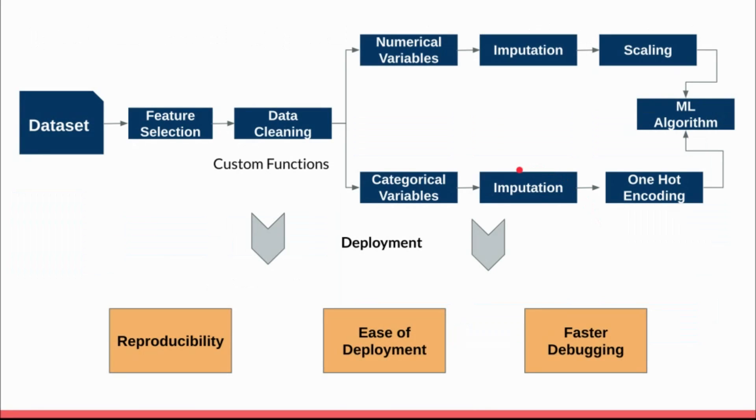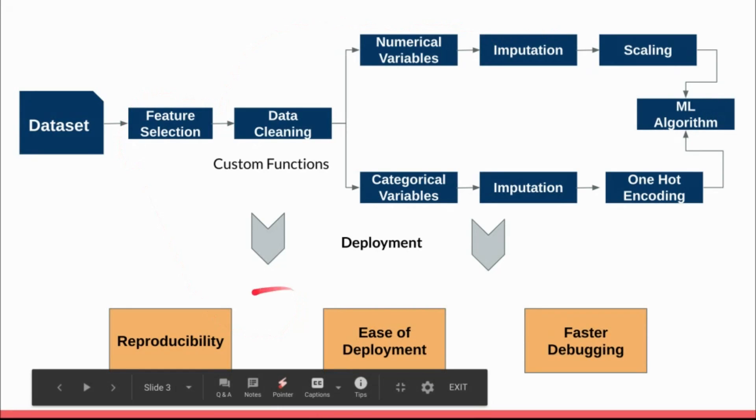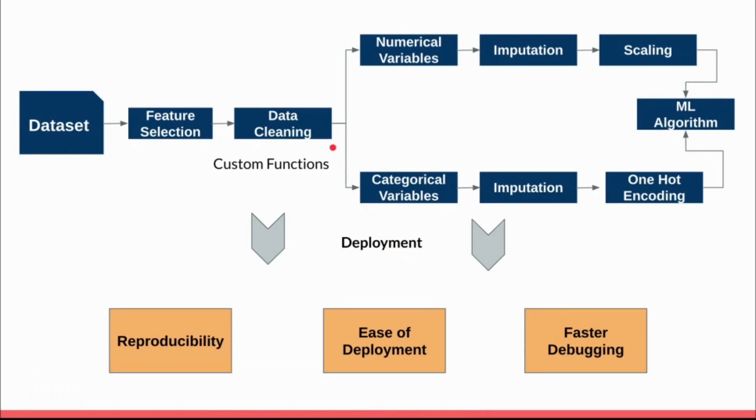When we think about deploying this pipeline, we typically have this program in a notebook or an IDE Python file. The final model that you save typically is just the model alone, but you have to go and deploy each and every function separately. This creates a challenge of reproducibility when you are deploying.